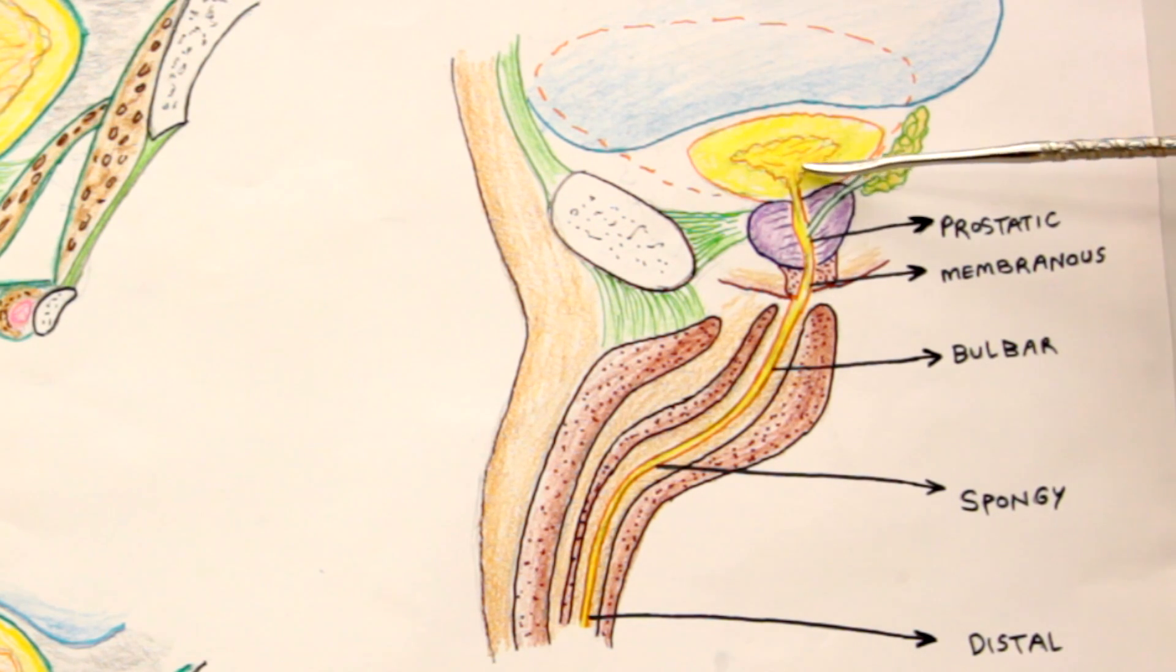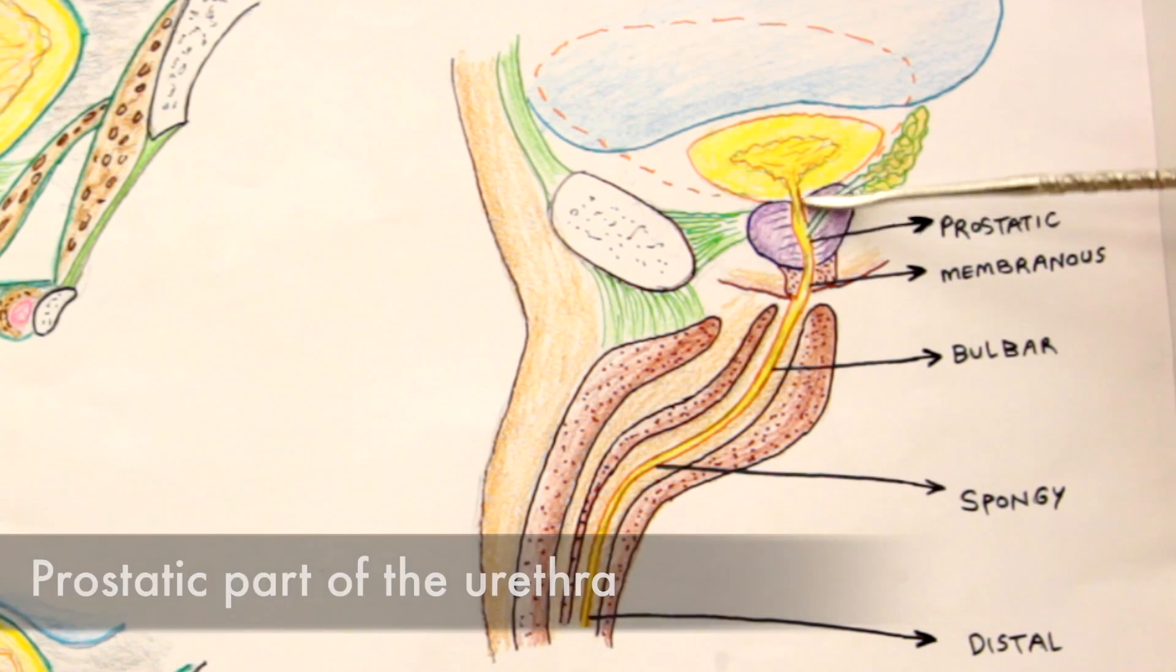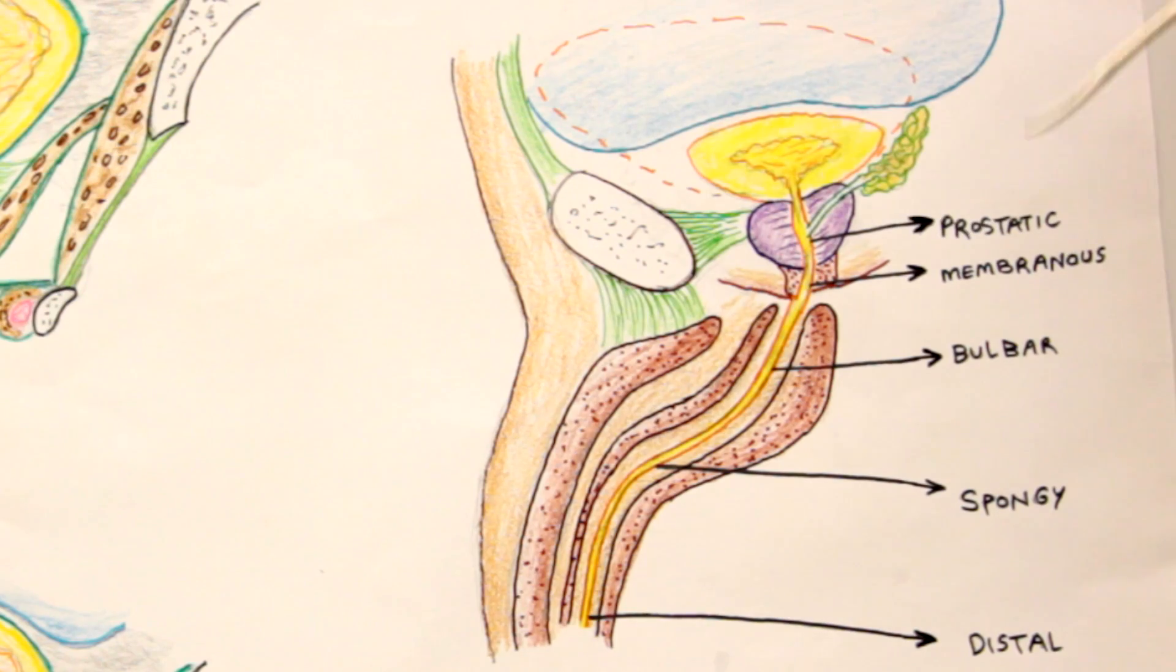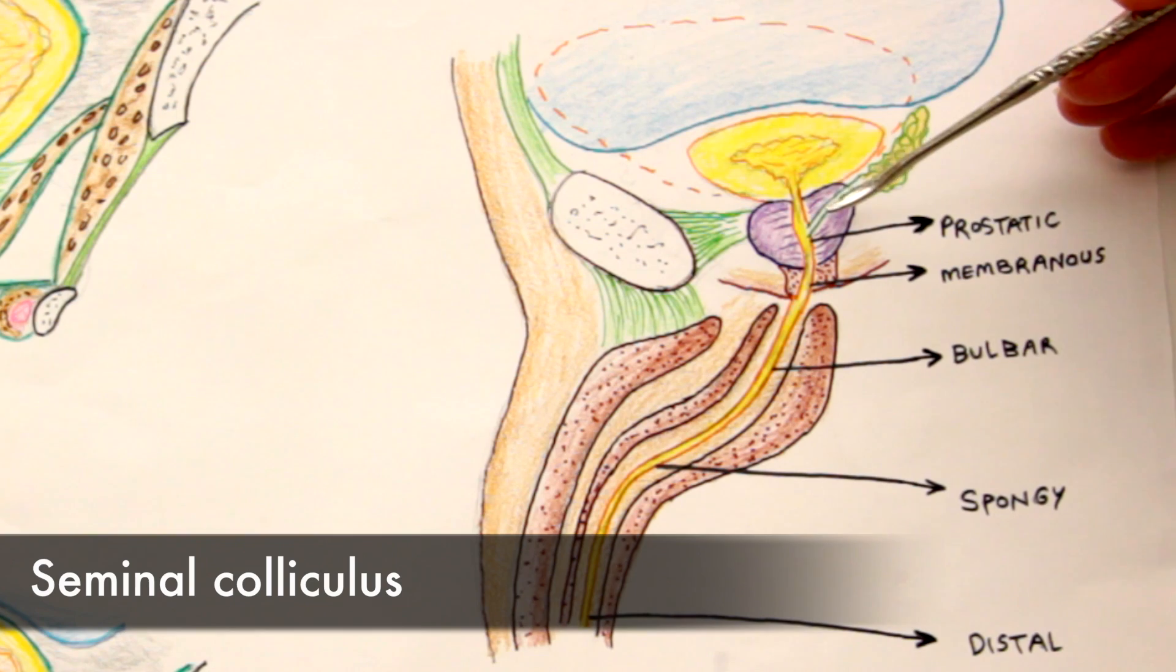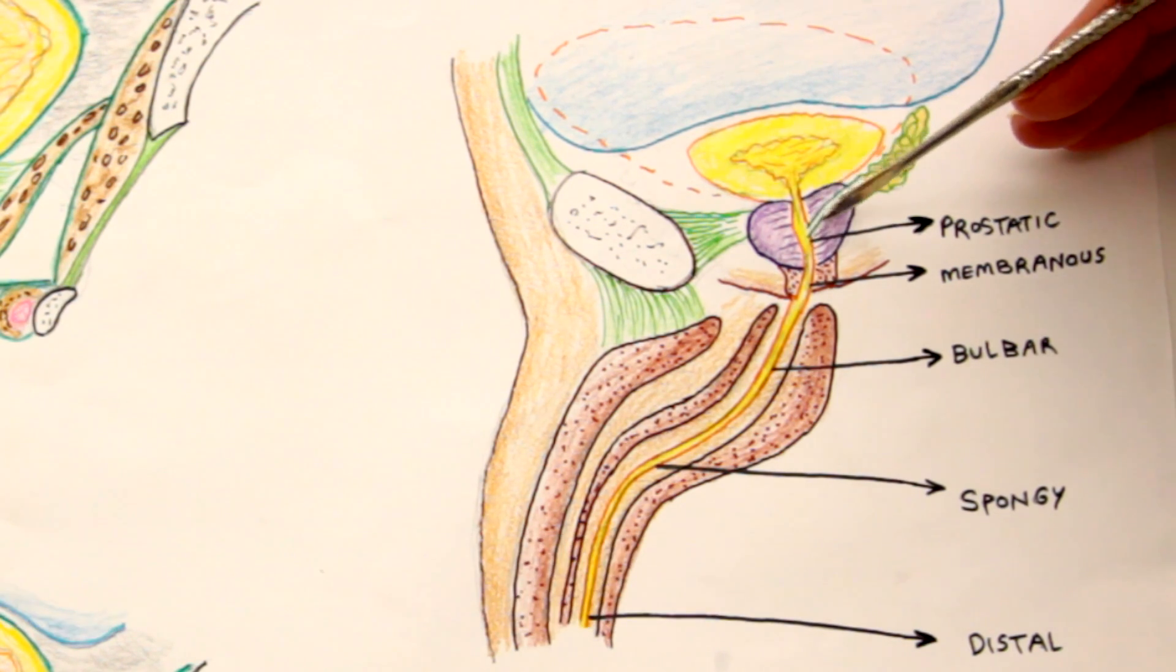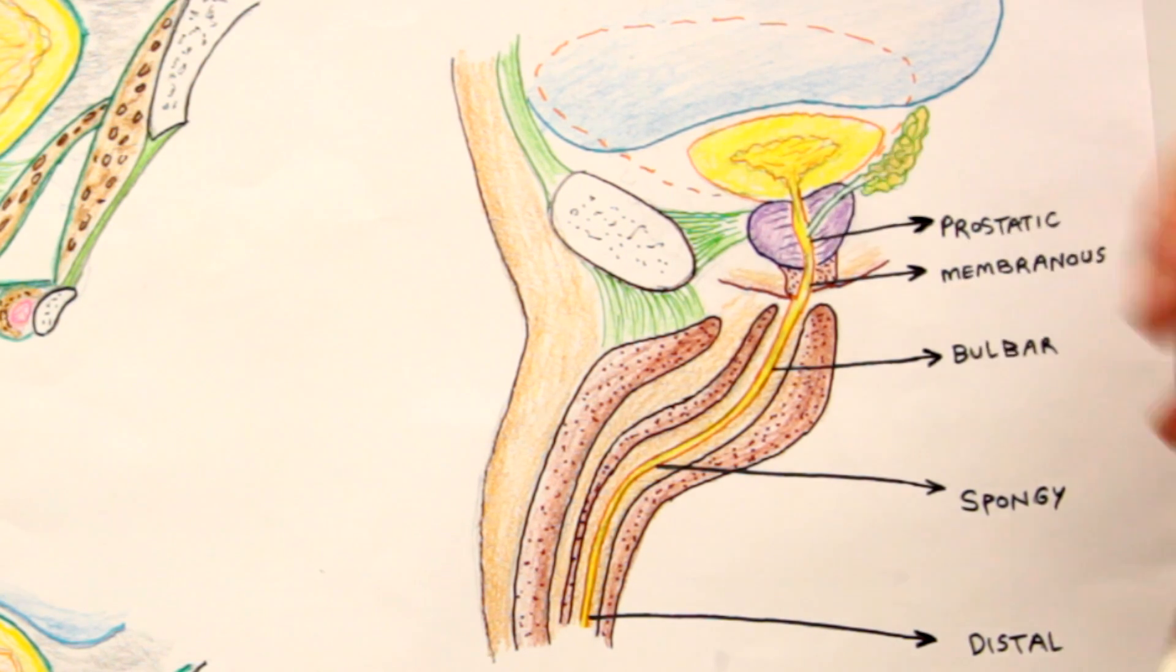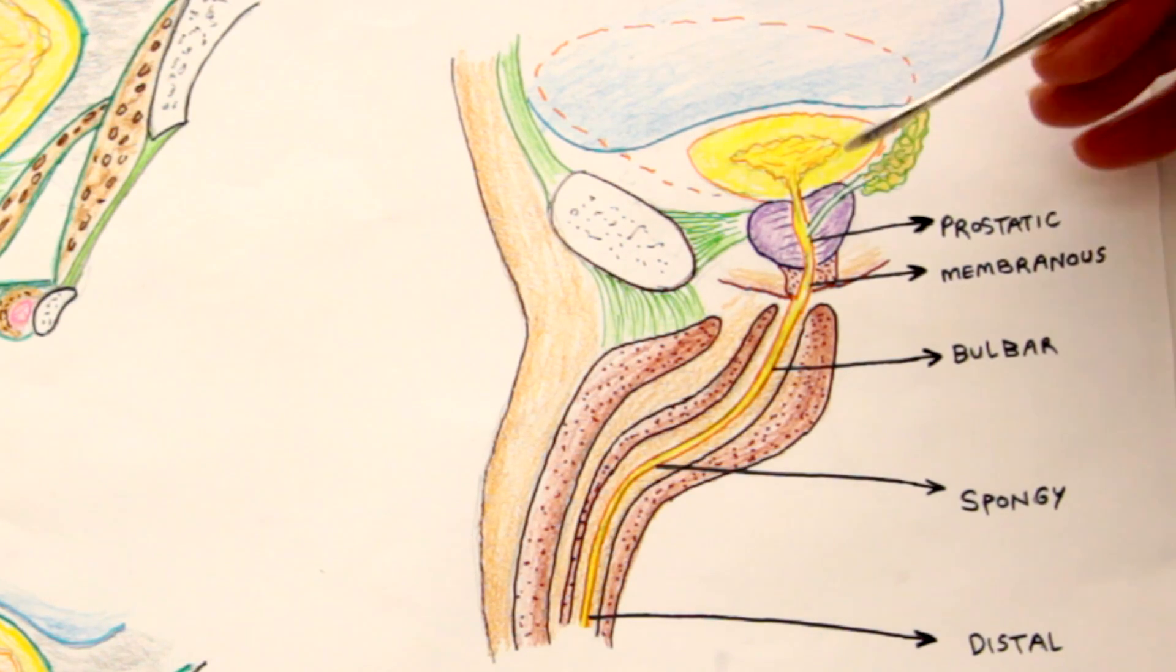We already know that the urethra starts from the neck of the urinary bladder on top of the prostate. When it enters the prostate, that's the prostatic part of urethra, or the second part, which is the widest part. It has a central projection like a colliculus, known as the seminal colliculus, and this is the urethral crest in the midline. The ejaculatory ducts and also the numerous ducts of the prostate gland, 30 to 15 in number, all open up into the borders of the urethral crest. That's why the prostatic urethra is the widest.